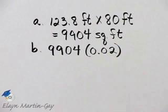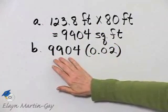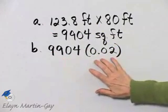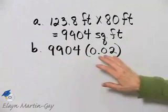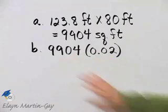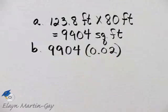So if this is the area of her lawn in square feet and she needs 0.02 ounces per square foot, we multiply 0.02 by 9,904.